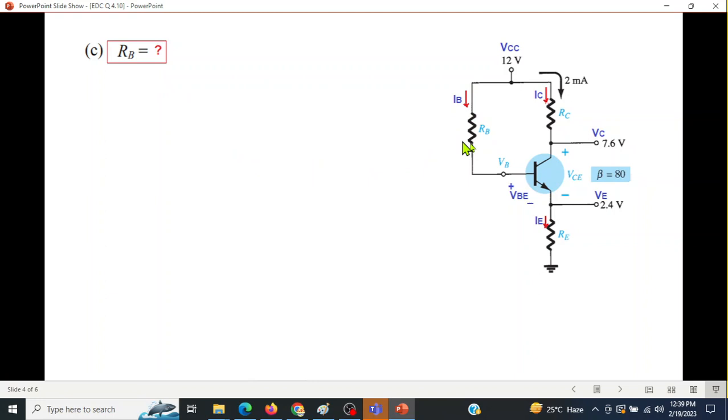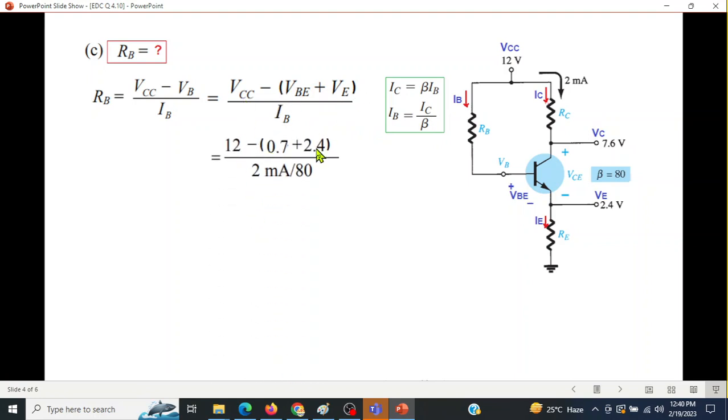Next is RB. This is RB, and RB we can find by VCC minus VB divided by IB. VB actually is VBE plus VE. So VB is VBE plus VE. How much is IB? Not given, but we know this formula that IC is beta IB. Therefore IB is IC over beta. IC is known, 2 milliampere, and beta is 80, so we can find IB. Now we plug in all the values: 12, 0.7, VE 2.4, 2 milliampere divided by 80. So RB comes to be 350 kilo ohm.